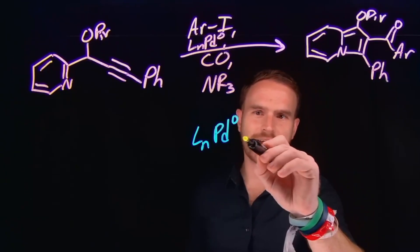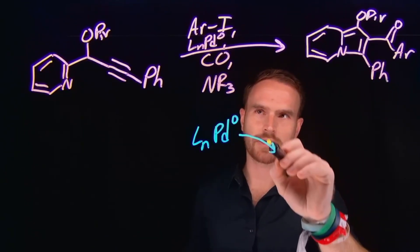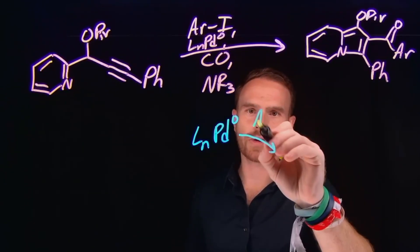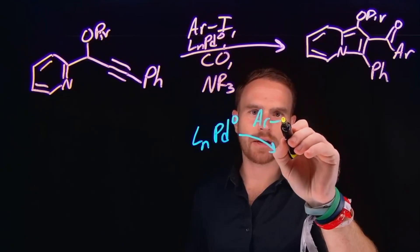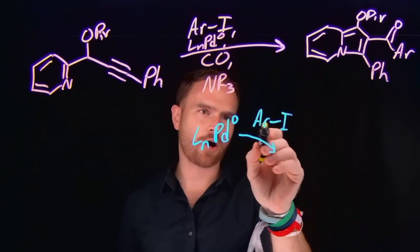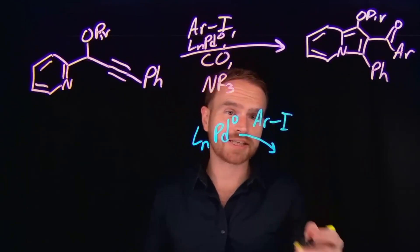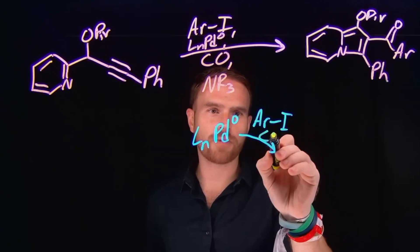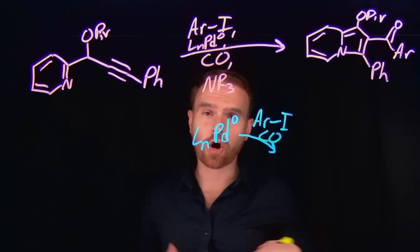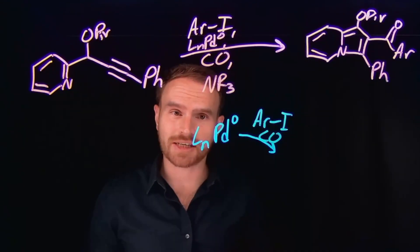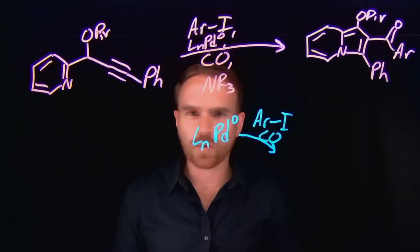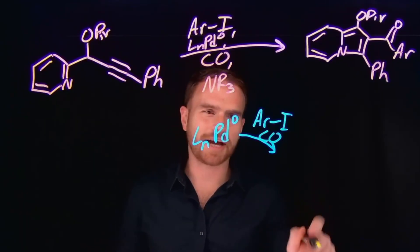So one of the first things that happens is actually going to be what's called oxidative addition, where the aryl iodide will come in and the palladium will actually insert in between the carbon and the iodine position. Additionally, I'm going to go ahead and say that the carbon monoxide acts as a carbonyl ligand and does ligand association to the metal simultaneously. Whether or not these two happen independently is kind of irrelevant.